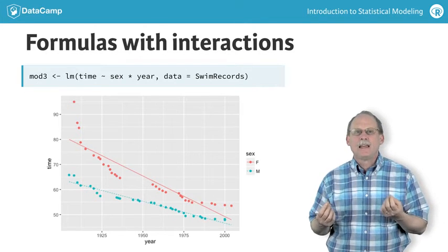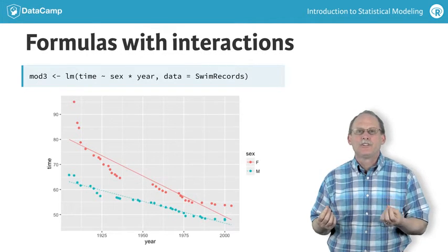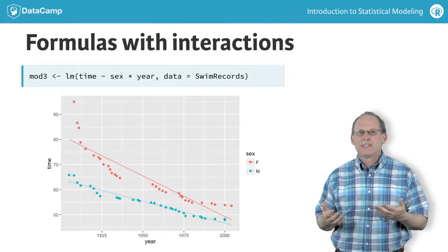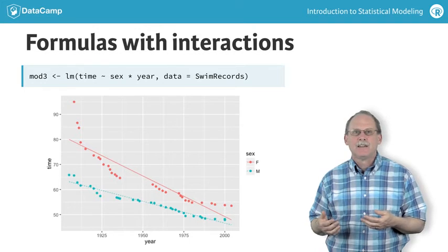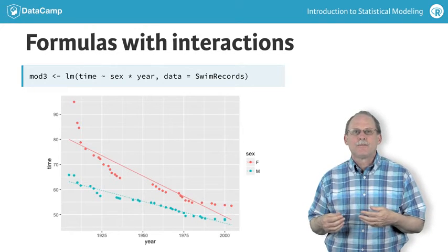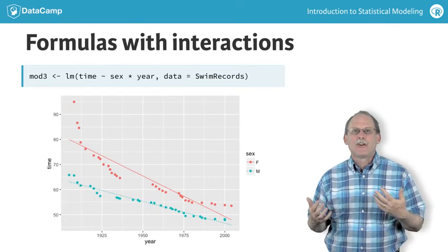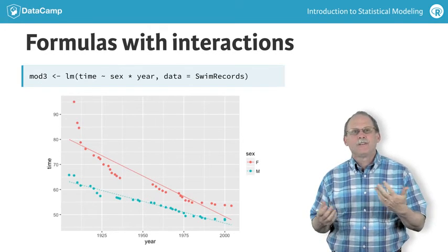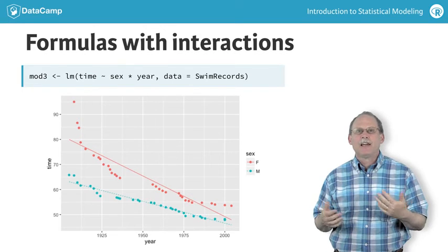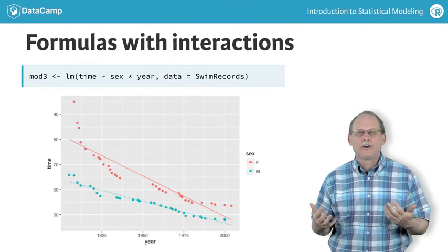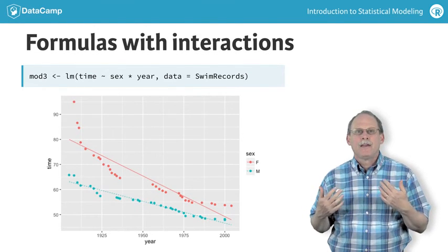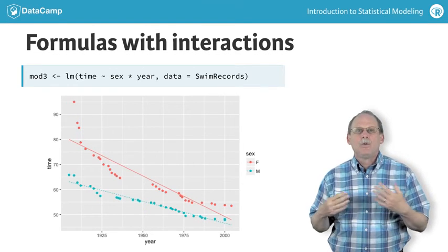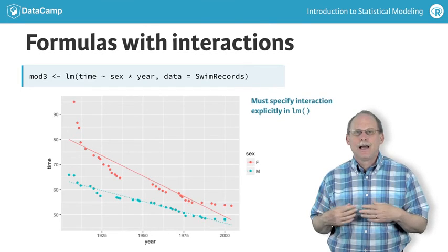There are good reasons why the LM architecture includes interactions only if you specifically ask for them. To a large extent, this has to do with the demands of small datasets. That's a subject for another course. But at this point, it's entirely adequate to work with some rules of thumb. RPART includes interactions naturally as part of the way the model architecture works. LM and some other model construction methods will include interactions only if you ask for them.